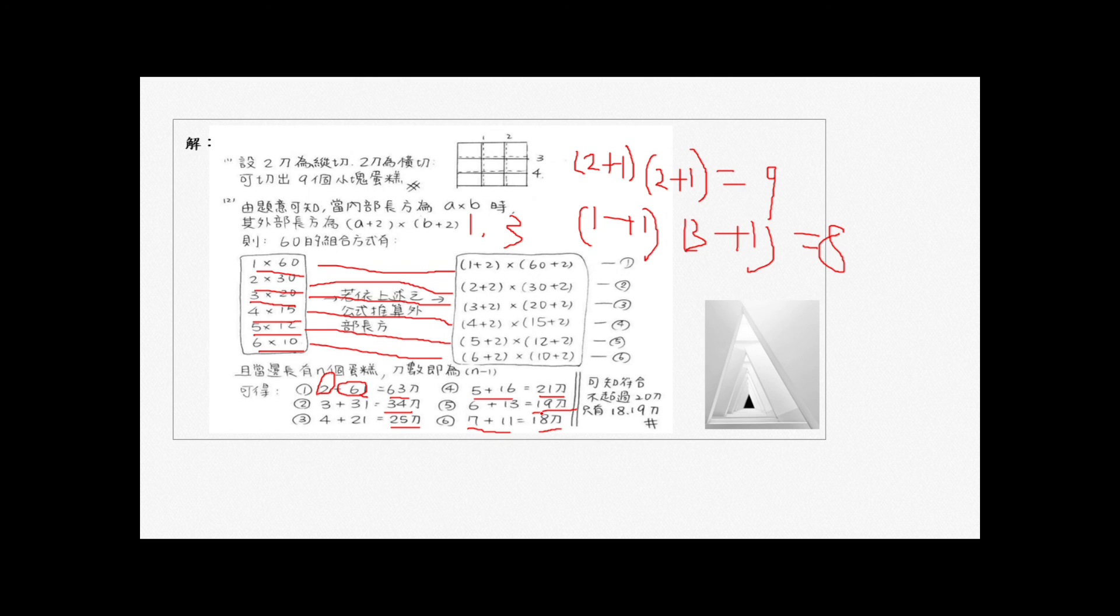第五种是五加二七、12加二14,所以刀数各减一就是六加13等于19刀。第六种六加二八、10加二12,所以刀数各减一变七加11等于18刀。那这一题目要求不可以超过二十刀,就是最多二十刀,所以只有哪一个符合?其他都超过二十刀,所以只有19刀跟18刀是符合的。所以这题只有两种可能:19刀跟18刀。以上是这两题的解法,谢谢大家。